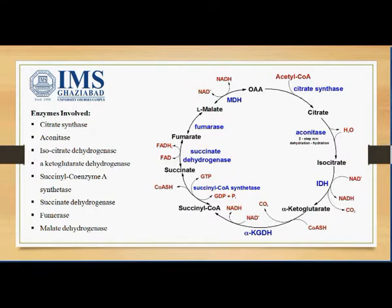Citrate loses one water molecule and gains another to convert into its isomer form, isocitrate. The isomer of citrate is then oxidatively decarboxylated, and NAD+ is reduced to its reduced form, NADH.